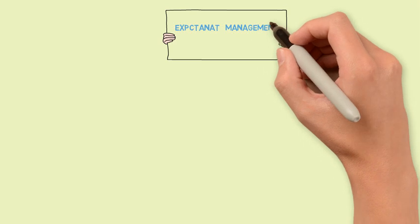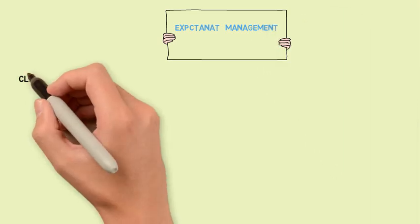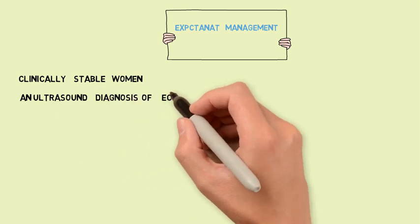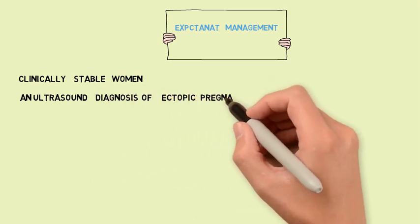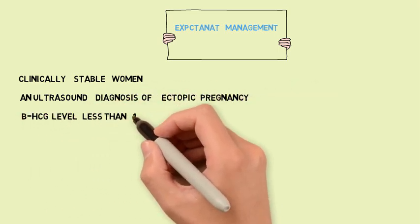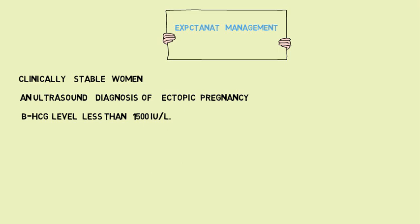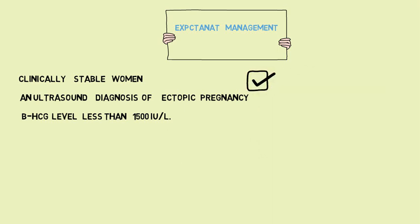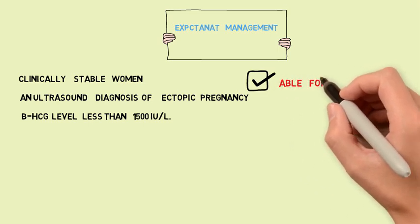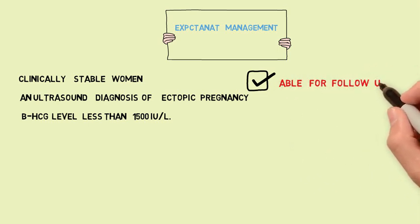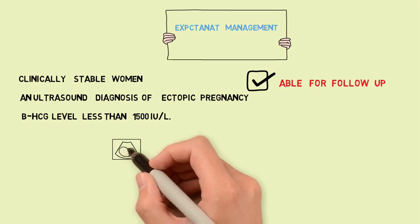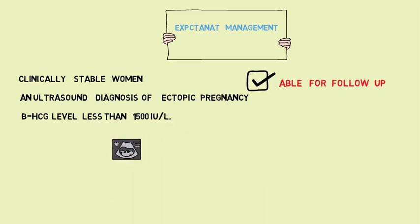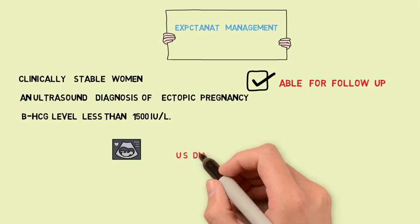Ectopic pregnancy management options include expectant, medical, or surgical management. Expectant management is suitable for the stable, asymptomatic patient who is able to follow up and has a beta-HCG less than 1,500 international units. The reported success rate varies from 50 to 100%. During follow-up, she needs twice-weekly HCG and weekly transvaginal ultrasonography.